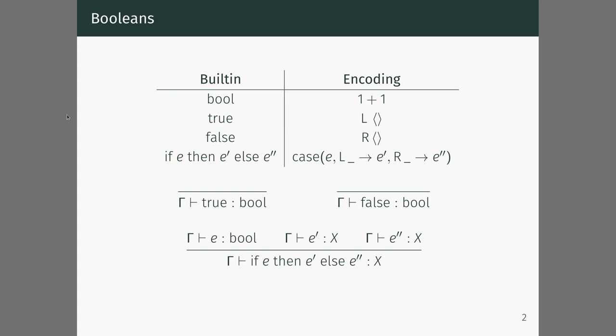If you have a Boolean which takes on two values, true or false, you can encode them in the simply typed lambda calculus. You can encode true as the left-tagged unit and false as the right-tagged unit. Then, if you have a Boolean, one thing you can do is test it — you can branch on it. You can say: if e, then e prime, else e double prime.